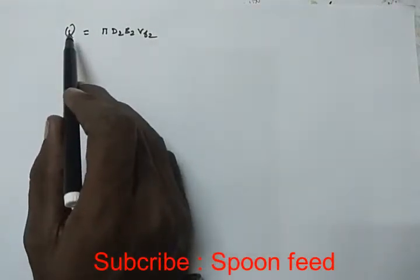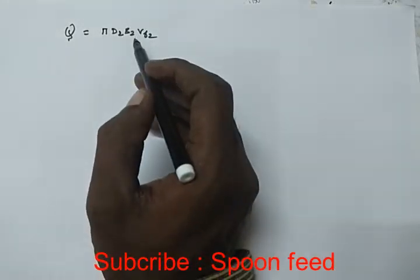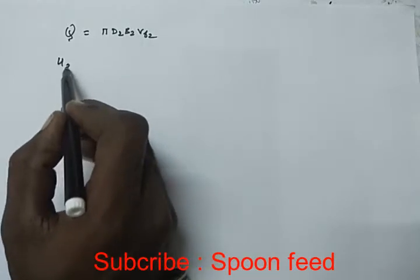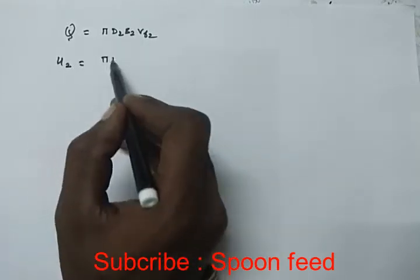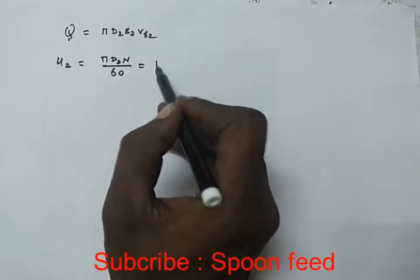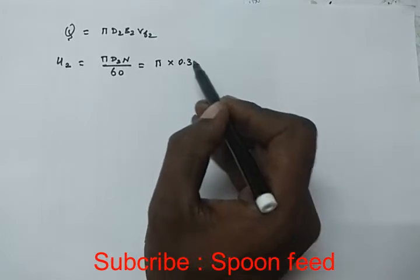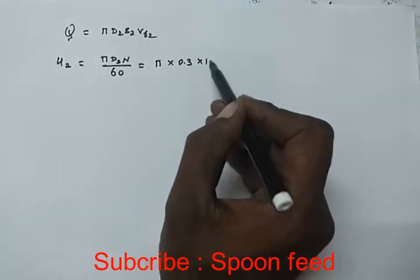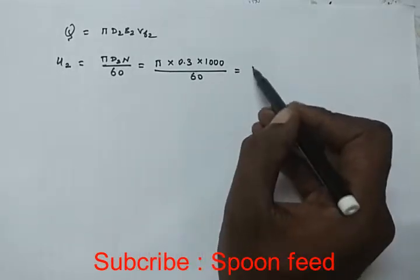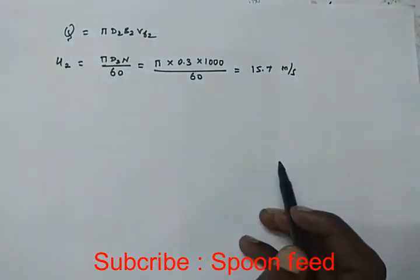First, u2 value. u2 equals pi D2 N divided by 60. So pi times D2 value 0.3 meters times N 1000 rpm divided by 60 equals 15.7 meters per second.